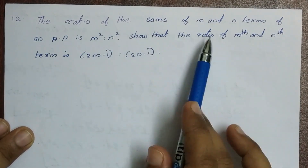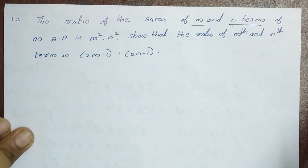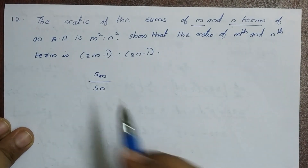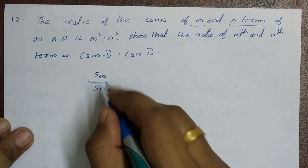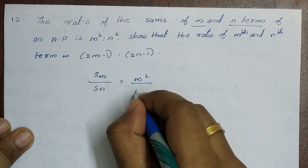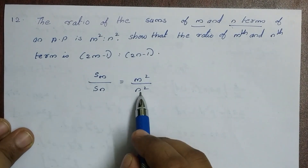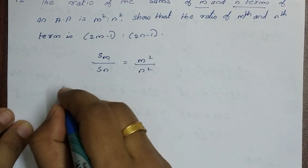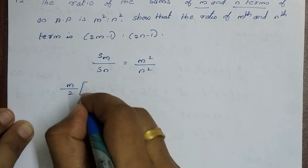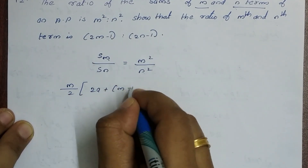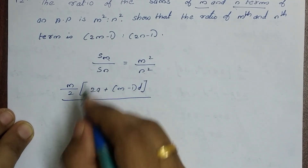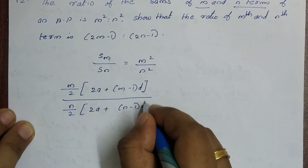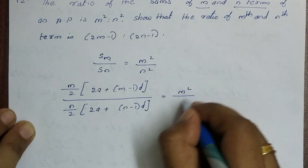So if we want to write the sum of m and n terms of the AP, the sum of m terms divided by the sum of n terms is equal to m² divided by n². That is: [m/2 × (2a + (m-1)d)] divided by [n/2 × (2a + (n-1)d)] is equal to m² divided by n².